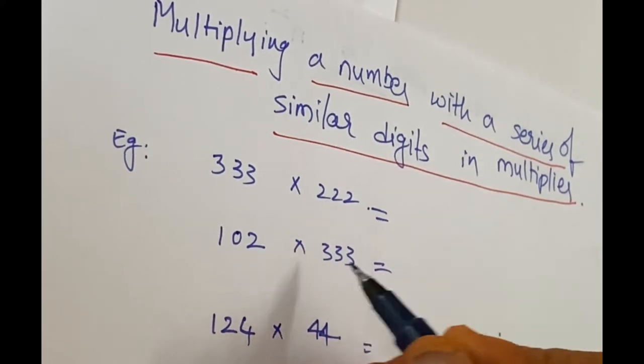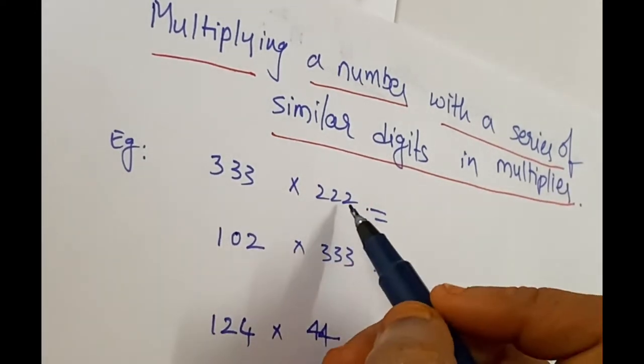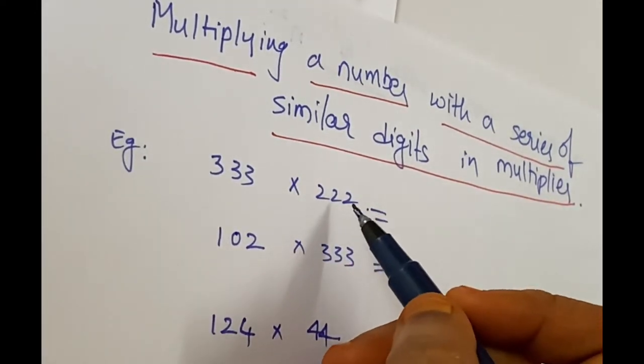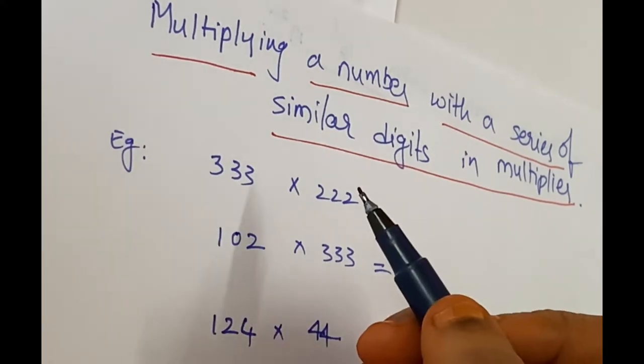Similar digits means 2-2-2 here, 3-3-3 here, and 4-4, and 5-5. So this is a multiplier and the digits here are similar. The series of twos, there may be two, three, or more. Note that when multiplying...